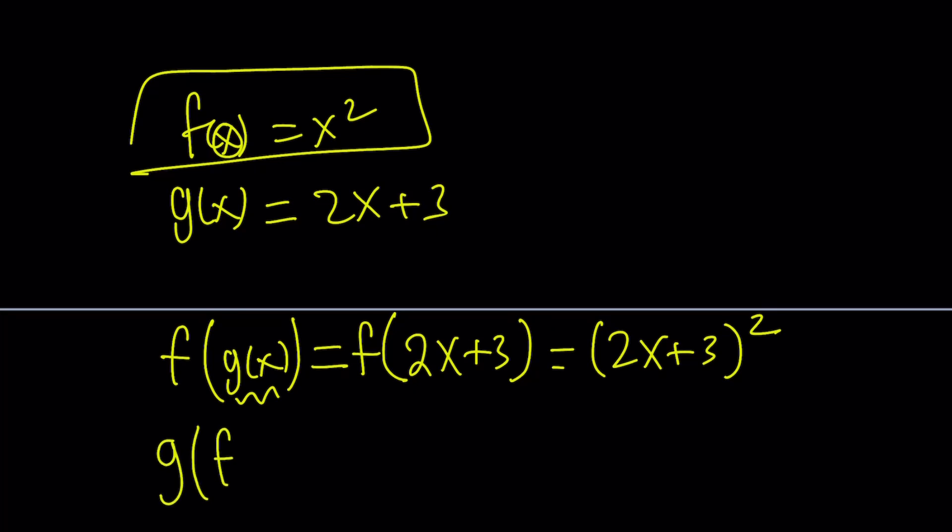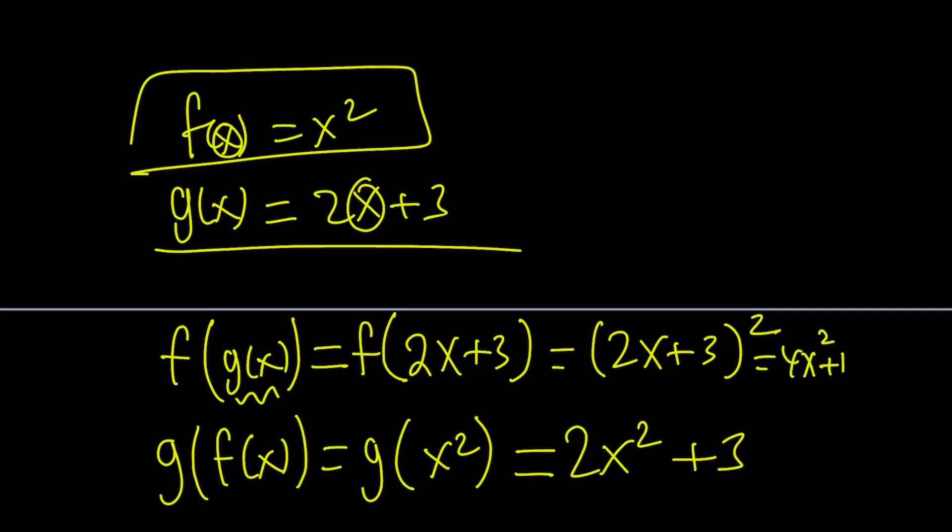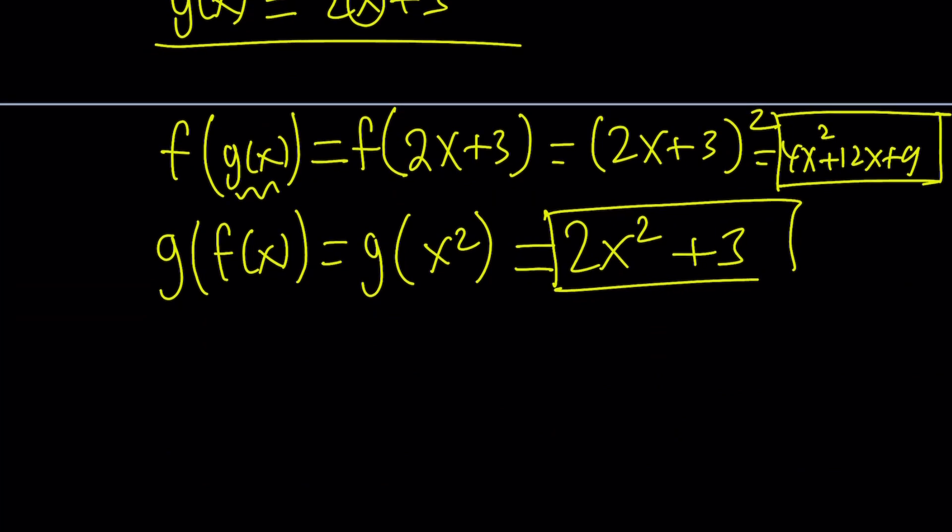So it's kind of like composition of two functions, replace the x with the other one. On the other hand, g of f of x would be replacing the f with x squared, so it's equivalent to g of x squared, but g is this. So if you replace x with x squared, you will get 2x squared plus 3. And as you know, this is equal to 4x squared plus 12x plus 9, and this is 2x squared plus 3. And obviously, they are not equal for all values of x.